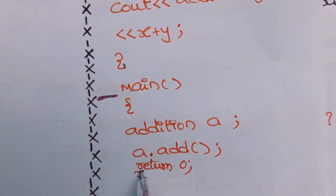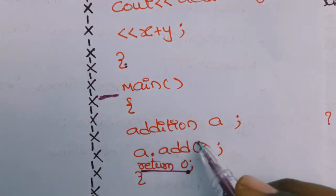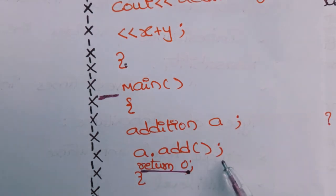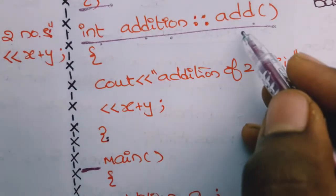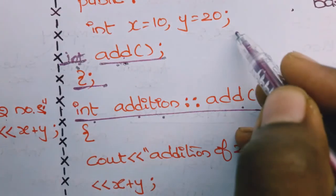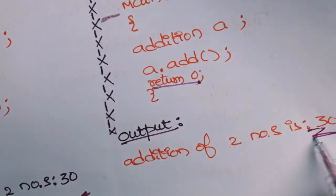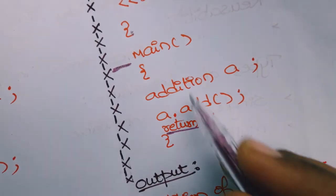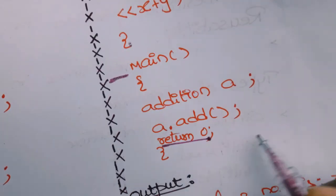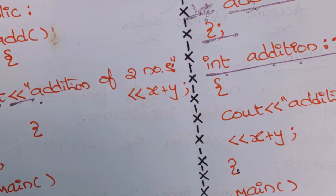If you mention void as the return type, you do not need a return statement. In main, create an object of class 'addition' named 'a', then call a.add(). Since x = 10 and y = 20 are declared in the class, it will print 'Addition of two numbers is 30'. Add return 0 at the end — this indicates the program completed successfully. This is the simple C++ program for addition of two numbers.